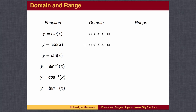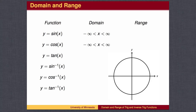The range of the sine function is all possible output values. The sine values are found by finding the vertical distance on the unit circle corresponding to an angle. The unit circle has its highest value at 1, which occurs at 90 degrees, and its lowest value at negative 1, which occurs at negative 90 degrees. The range of the sine function is therefore all numbers between negative 1 and 1.